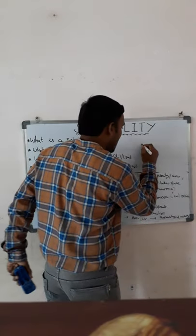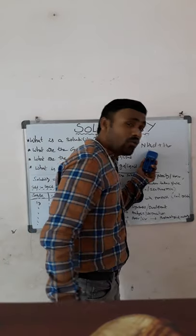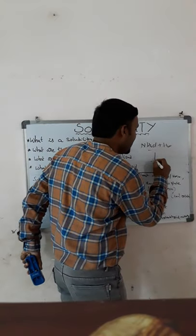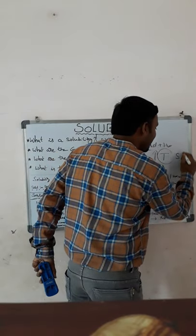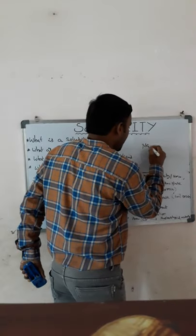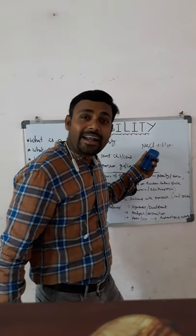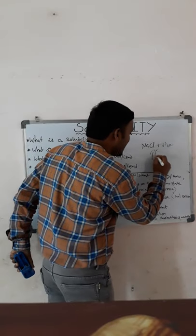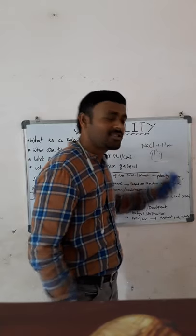Another example: ammonium fluoride in water requires heat from an external source to dissolve — it is endothermic. Here, if you apply external temperature, solubility will increase. A third case is sodium chloride in water, which is an isothermic reaction — it neither gains nor releases heat. If you apply temperature to this solution, the solubility will not change; it remains the same.